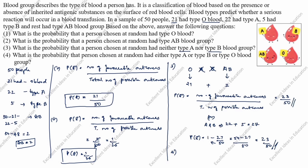Fourth question: what is the probability that a person chosen at random had either type A or type B or type O blood group? Type A blood group is 22, plus type B blood group is 5, plus O blood group is 21. Add these three: 21 plus 22 plus 5 is 48. P of E is equal to favorable outcomes 48 divided by total possible outcomes 50, cancel to get 24 by 25. So 24 by 25 is the answer. Thanks for watching this video.